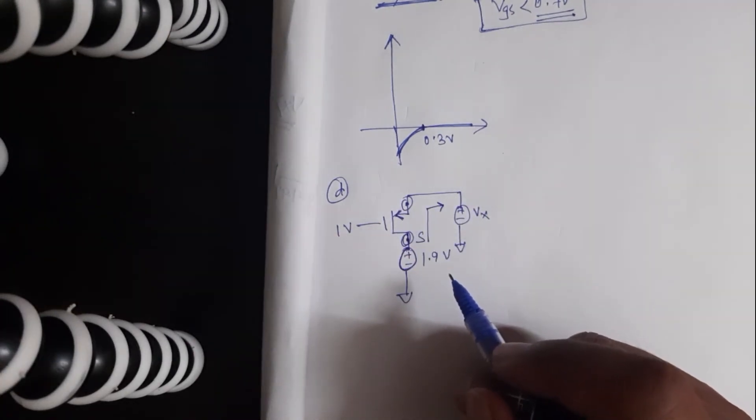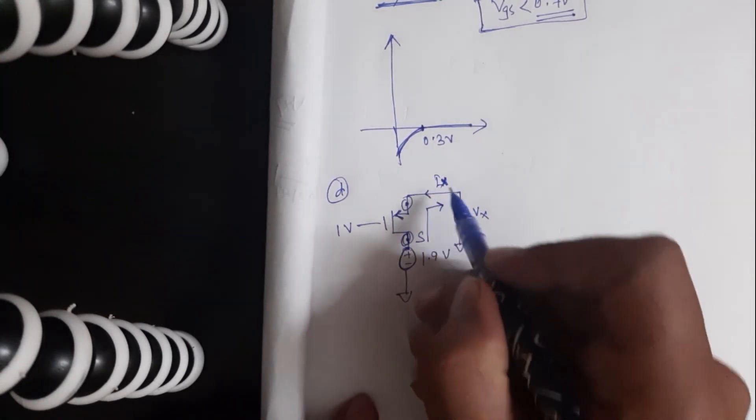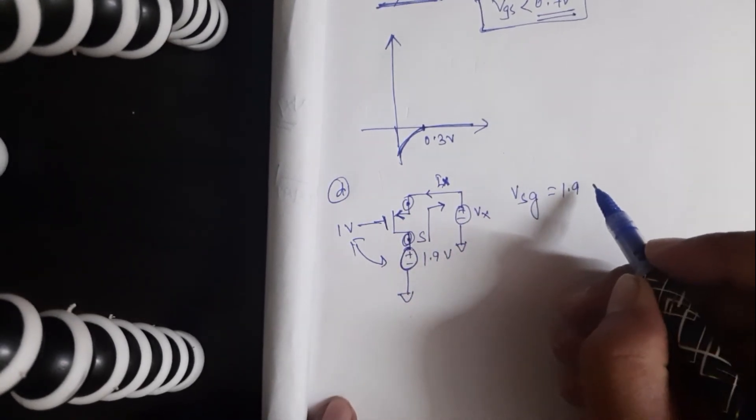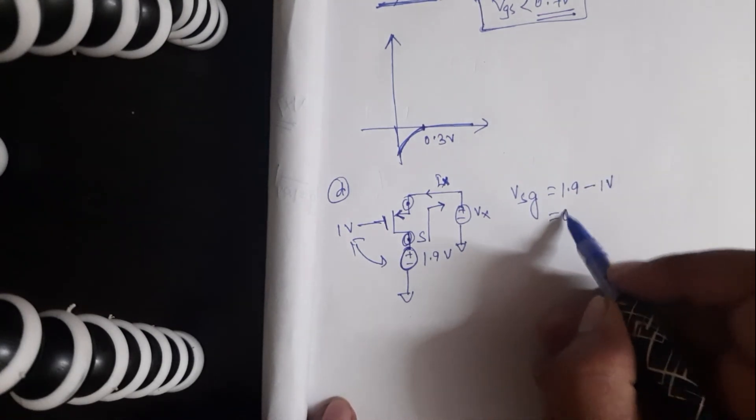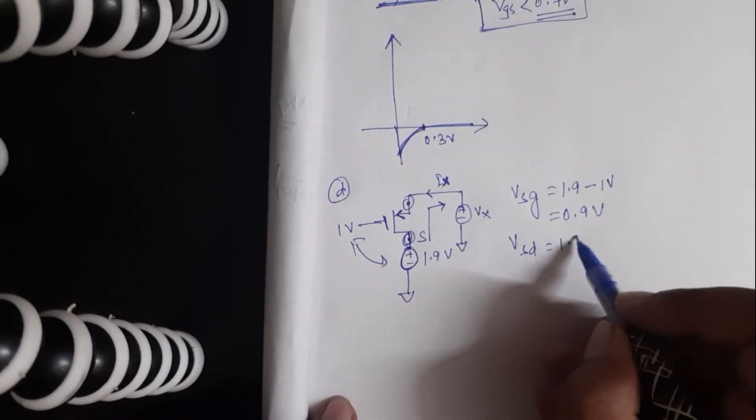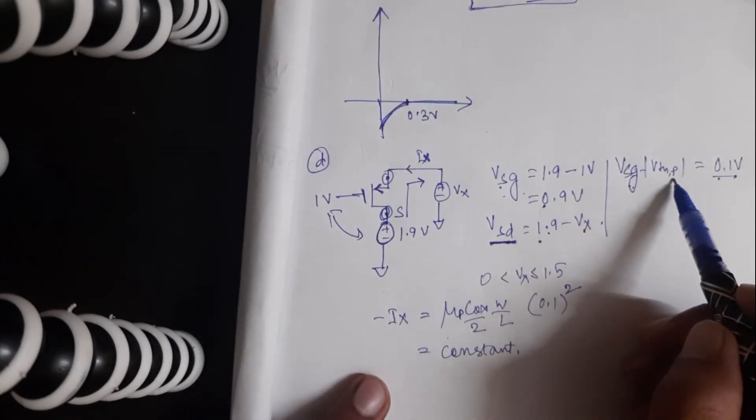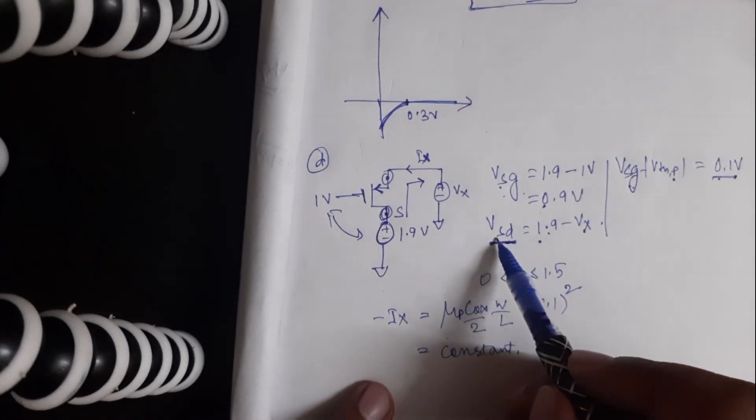And in PMOS, current flows from source to the drain because the carriers are p-type, or rather the carriers are holes, and the current direction is IX. VSG is 1.9 minus 1 volts, which is 0.9 volts. VSD is 1.9 minus VX. The overdrive voltage is VSG minus VTHp, which is 0.1 volts.